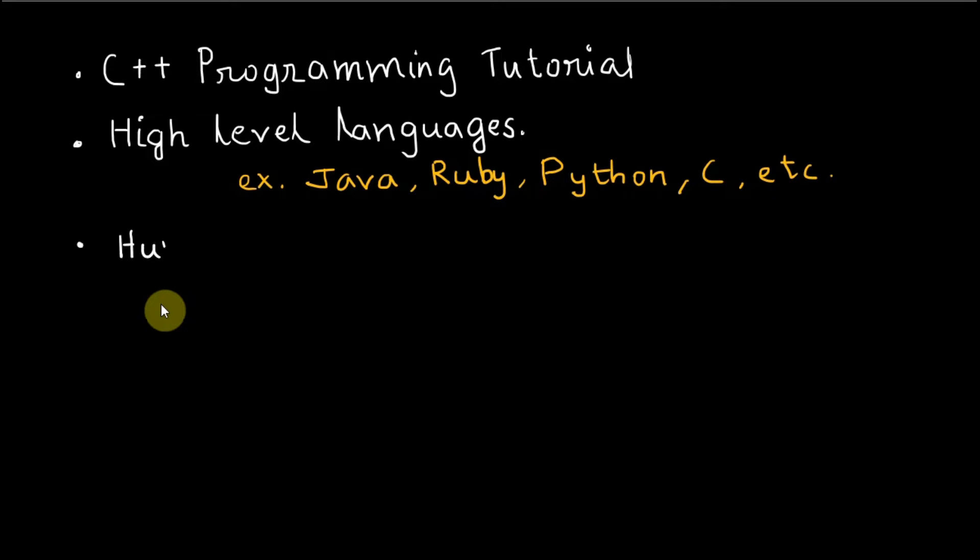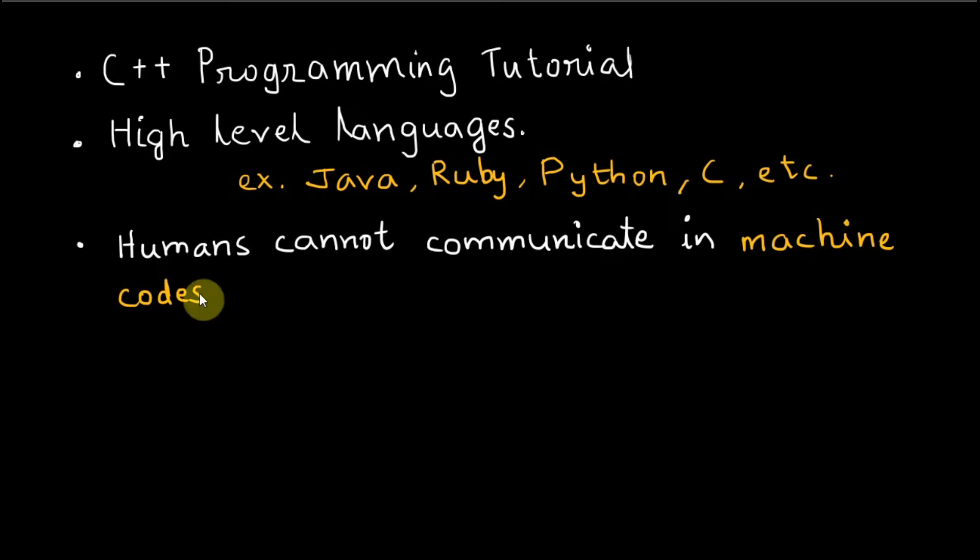Since humans cannot communicate or send instructions in assembly language or machine language that involve using ones and zeros, we write source code in high level language that is translated into machine language which computer can understand.